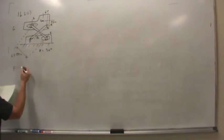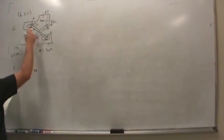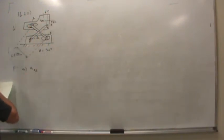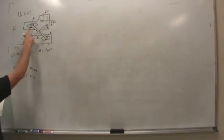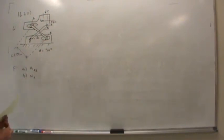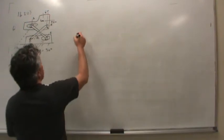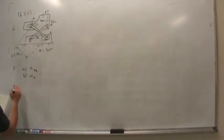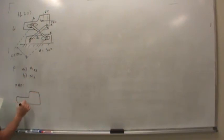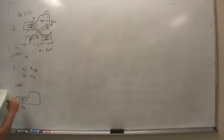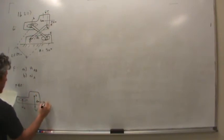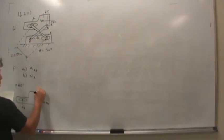We're supposed to find part A, the acceleration of AB — this big upper member — and for part B, the normal force at A, how much force this scissor link is applying to the upper link. Let's start with a free body diagram of the upper link. There's a normal force at A, weight at G, and at B we have forces Bx and By.